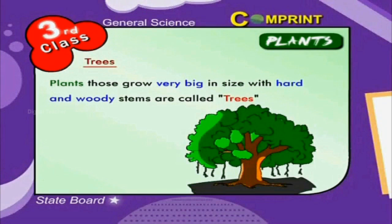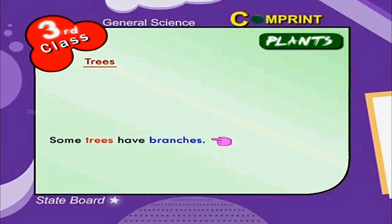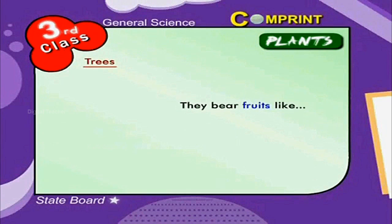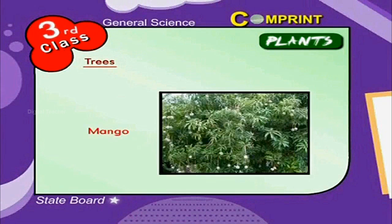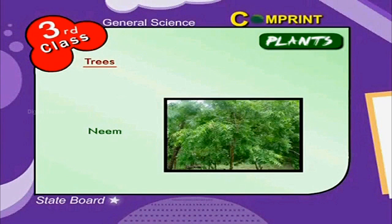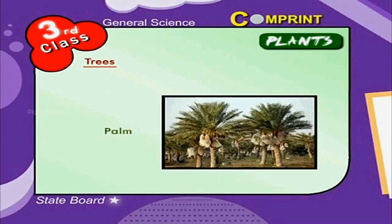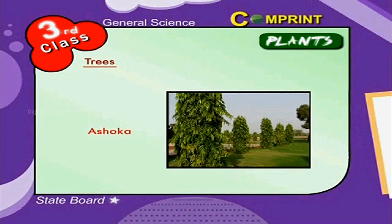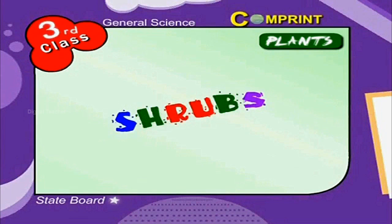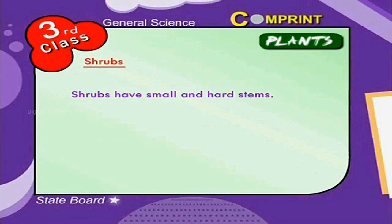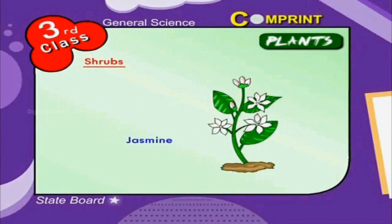Plants with hard and woody stems are called trees. Some trees have branches and bear fruits like mango, neem and tamarind. Some trees don't have branches but bear fruits like coconut, palm and ashoka trees.